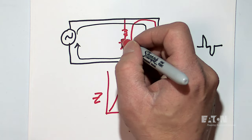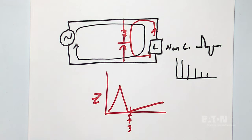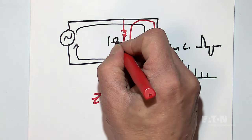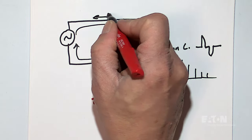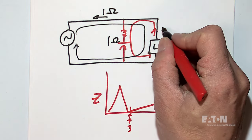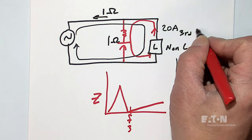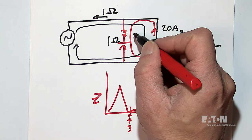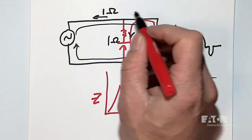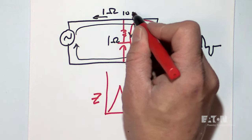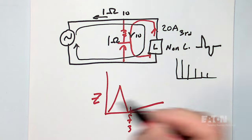Let's say the impedance of this path is one ohm, and let's say the impedance of this path is one ohm. And if I put out, let's say, 20 amps of third harmonic current, I'm going to have, and we've talked about this in other videos, 10 amps going here and 10 amps going here. That's how current divides.